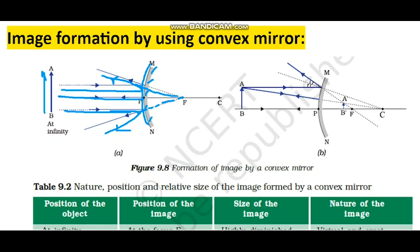So the first case is clear. The object is at infinity. The position of the image is at the focus, behind the mirror. The size of the image is a point size — highly diminished. If we talk about the nature, the image will be virtual and erect.